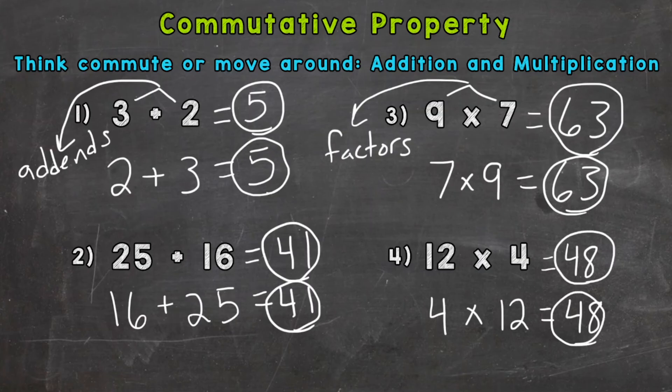So there you have it. The commutative property states that we can move the factors, which is multiplication, or the addends in an addition problem, and still get the same answer. And again, this only works for addition and multiplication.